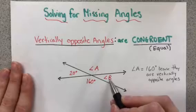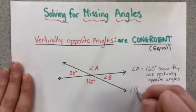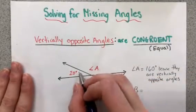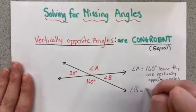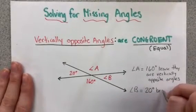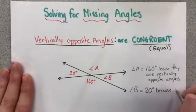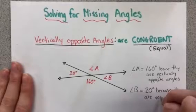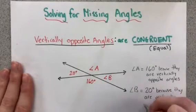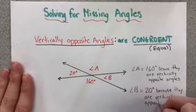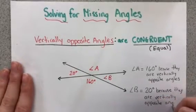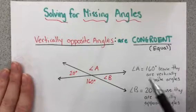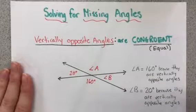If I have to solve for the missing angle B, angle B will be equal to 20 degrees if it's vertically opposite with this angle on this side, because they are vertically opposite angles. It's always important to justify your answer as to how you solved for each angle.